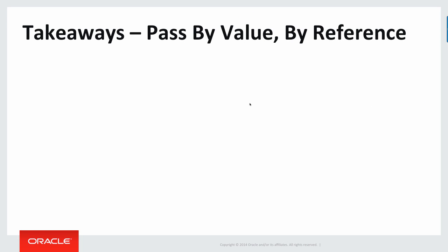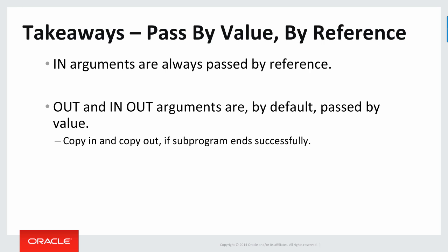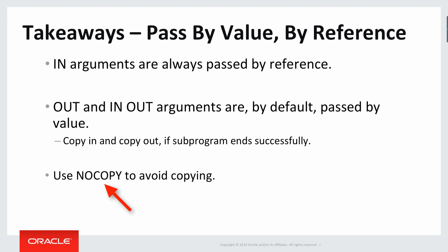Let's review the takeaways for passing by value and passing by reference. First, IN arguments are always passed by reference — they're read only, and you refer directly to the value that was passed in. OUT and IN OUT arguments are by default passed by value, meaning the PL/SQL runtime engine copies in the values of IN OUT arguments, the processing takes place, and then if the subprogram ends successfully with no unhandled exception, the values of the OUT and IN OUT arguments are copied back out to the variables passed to the subprogram. But if you don't want that copying — if you're worried about memory or performance — you can consider using the NOCOPY parameter hint to avoid copying, and that is the subject of a different video.